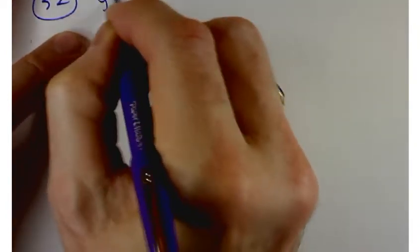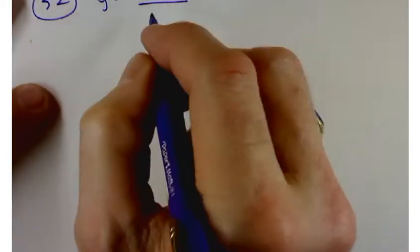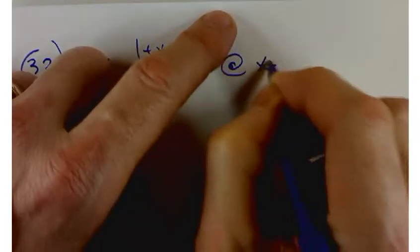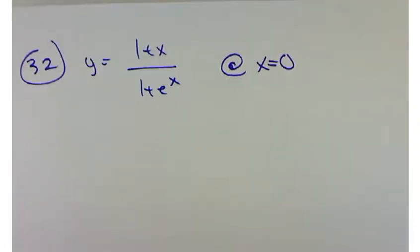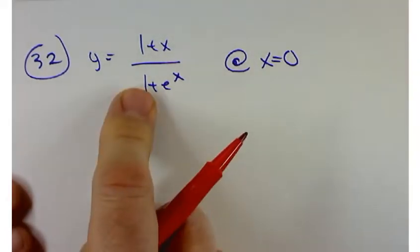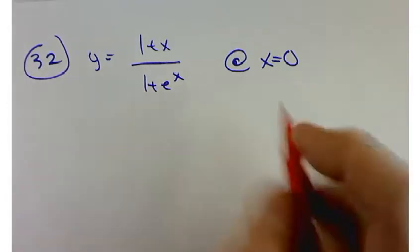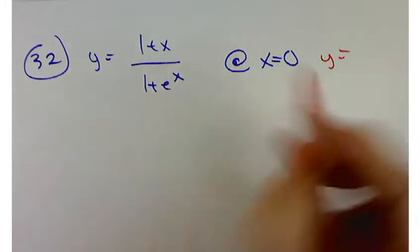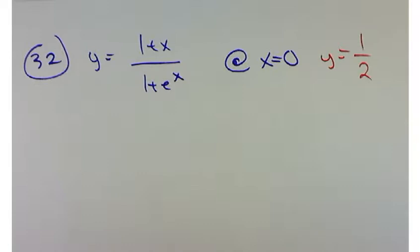Let's cut back over to here. Problem 32. We've got y equals 1 plus x over 1 plus e to the x. We want to find the equation of the tangent line at x equals 0. Now, notice I'm not giving you the y-coordinate. The book does, but I'm not going to. Well, I guess one thing we can do is first of all figure out what the y-coordinate is.